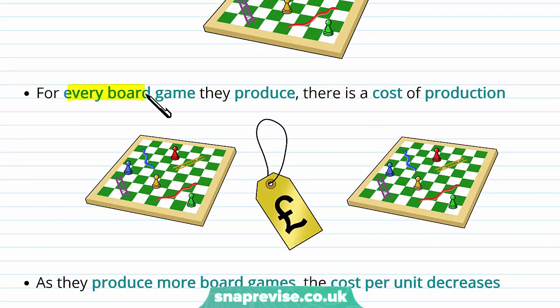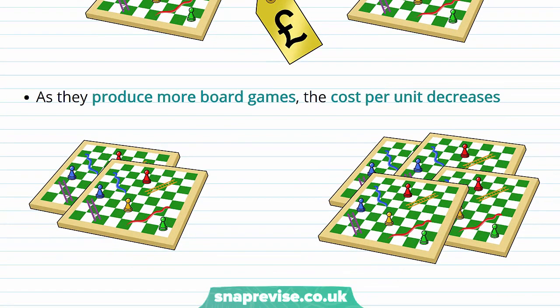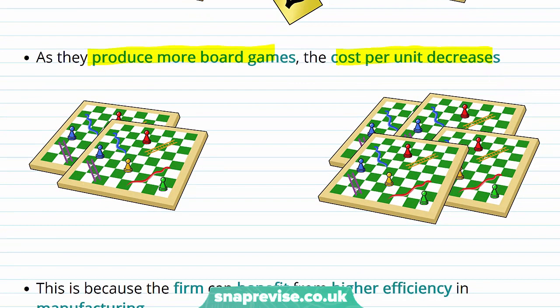For every board game the firm is producing, there is a cost of production, and let's just say each board costs three pounds. As they produce more board games, the cost per unit decreases. So when we had just two board games, the cost per unit was three pounds, but now as we are producing more, we are reducing our costs per unit to two pounds fifty.